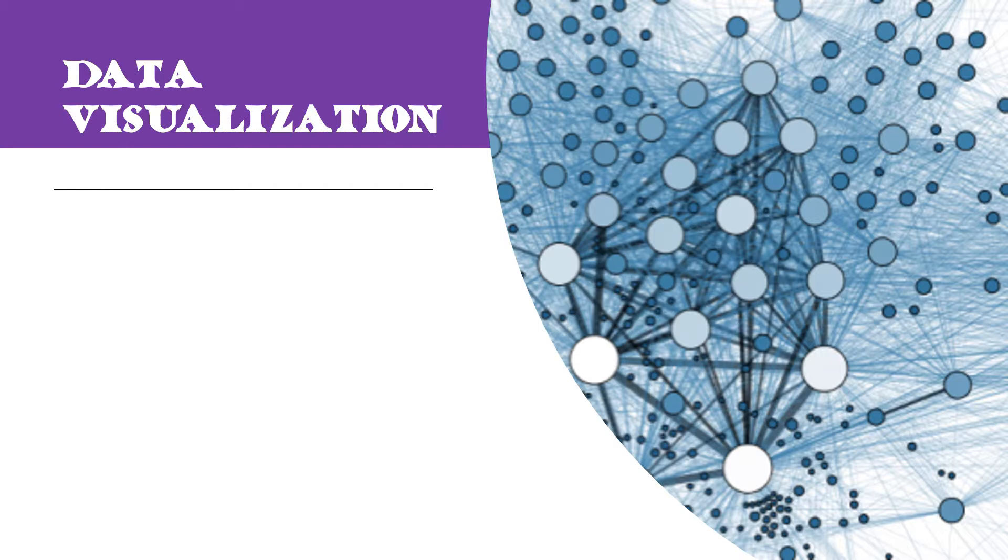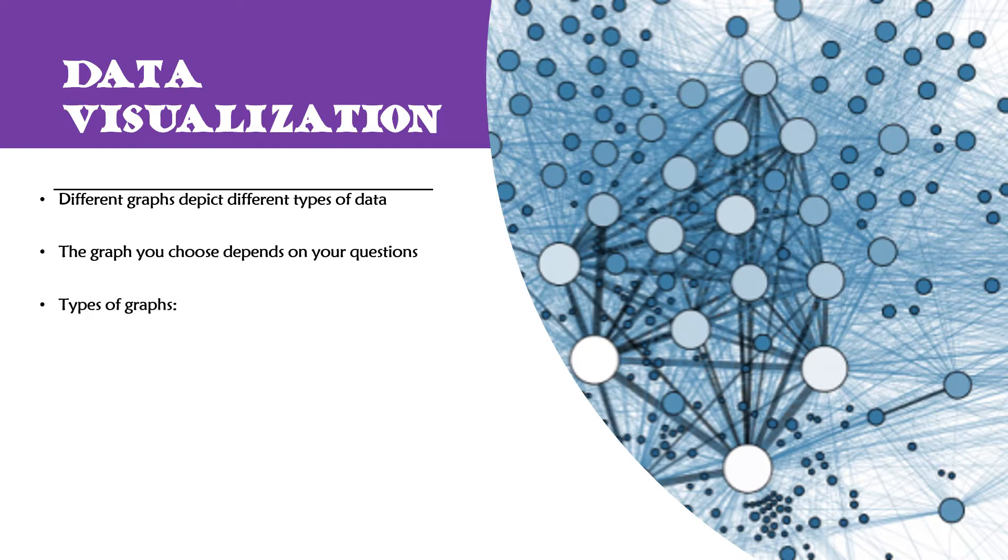So data visualization is a big deal. Your graph should show everything about your results without words. That is what the purpose of a graph is: to show your results without words in a very straightforward way. So there are different graphs that depict different types of data. The graph you choose is going to depend once again on your well-defined question and experimental design. So you have to know what you want to address and then from there determine what graphs you're going to use to address it.